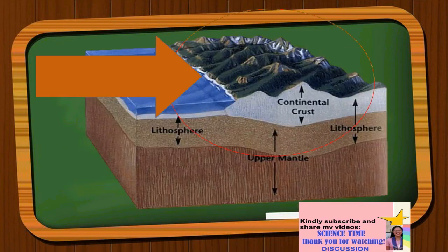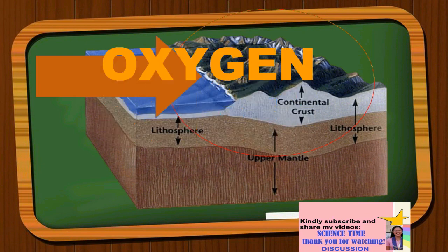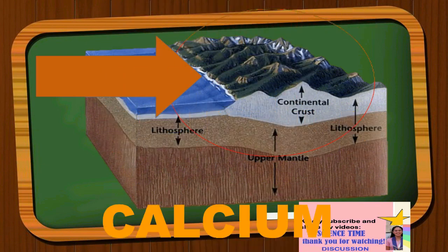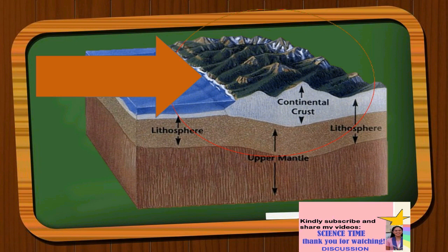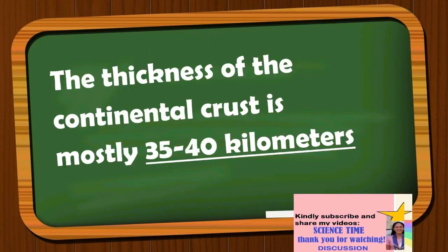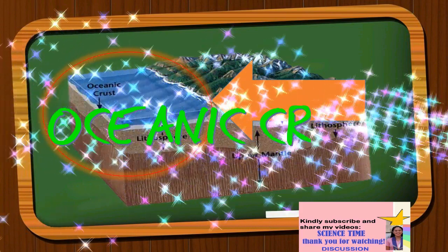The continental crust is mainly made up of silicon, oxygen, aluminum, calcium, sodium, and potassium. The thickness of the continental crust is mostly 35 to 40 kilometers. Continental crust is found under the land masses and is made of less dense rocks such as granite.